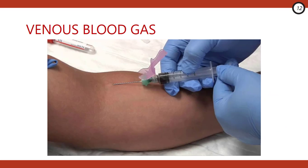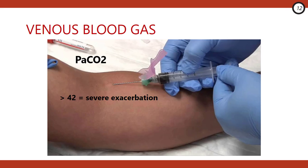Another often debated investigation is the venous blood gas. A VBG is seldom indicated unless the child is demonstrating no clinical improvement whatsoever despite maximal therapeutic interventions in the ED — and in reality, we know these kids are going to end up going to the pediatric ICU. The VBG serves as a baseline for ICU colleagues to plan future management. Key reference numbers: a PaCO2 greater than 42 is indicative, but not diagnostic, for a severe exacerbation; and a value above 50 is a risk factor for impending respiratory failure.